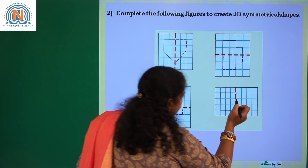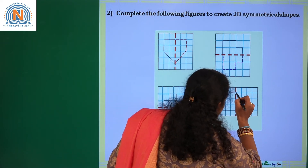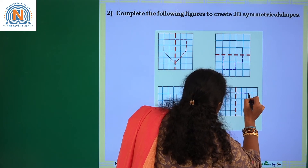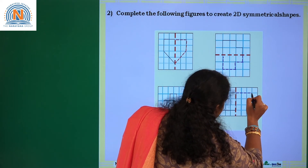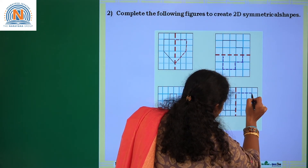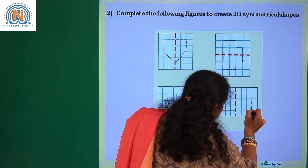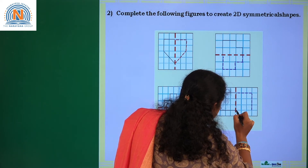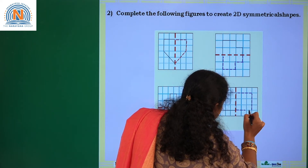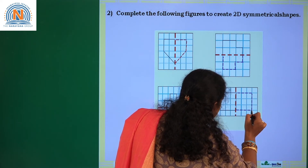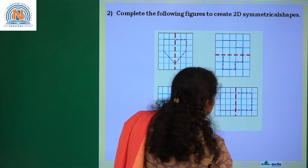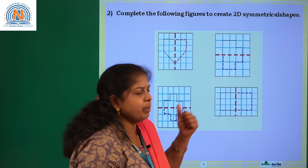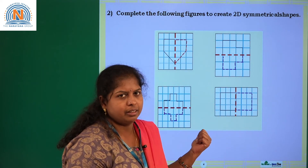Coming to the last symmetry figure: count 1, 2, 3 — three square boxes. Take up to three square boxes and draw like this. This is the other part of the given symmetrical figure.